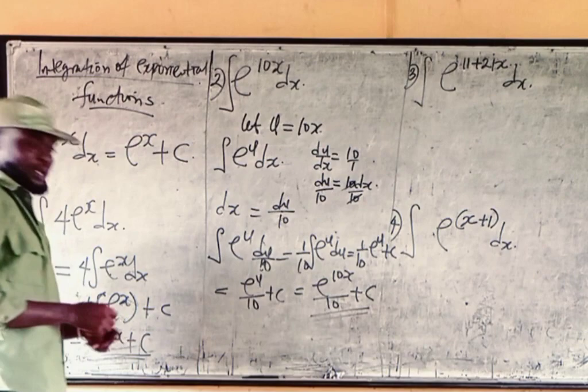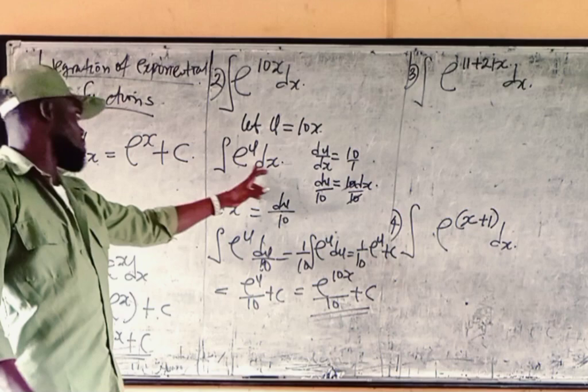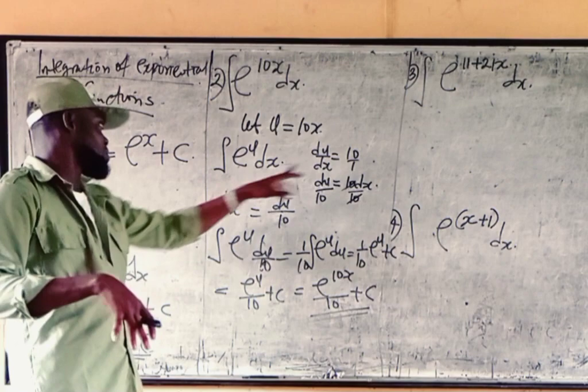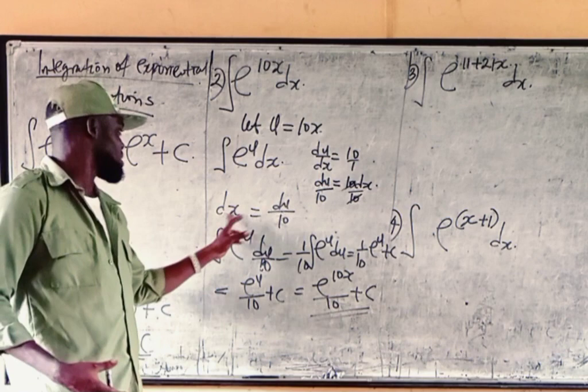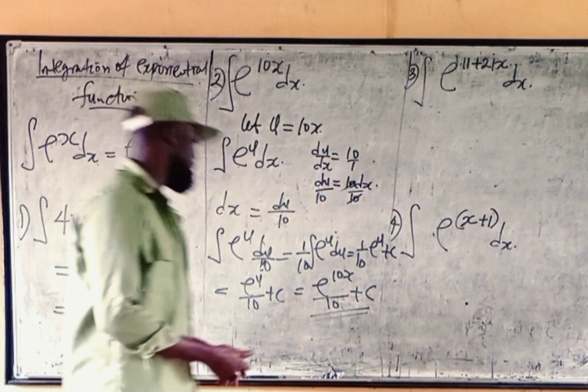First, we need to let the power be u. Then we'll change the u to get our dx. We need dx from the formula. Because we now have exponential u with respect to x. Then we will substitute the equivalent value or the actual value which corresponds to dx into this dx place. We get dx over 10 from this place. Then if you integrate exponential u, you're going to have exponential u plus c. Then bring back the value of u, which is 10x, and that will be your final answer.